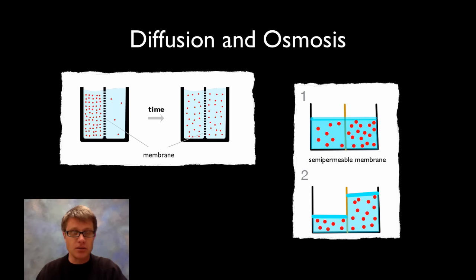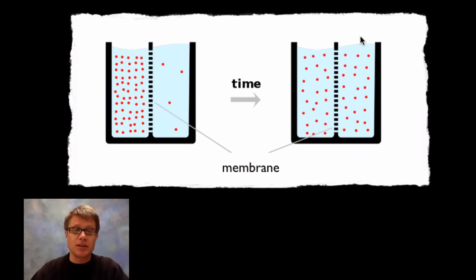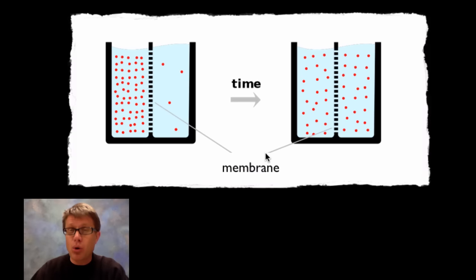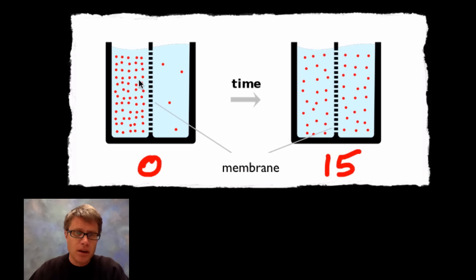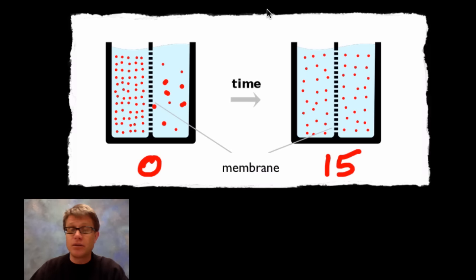Let me go into more depth on diffusion. Imagine a jar separated in the middle by a porous membrane that allows material to move back and forth. At time zero, one side has sugar water and the other side has distilled water. After 15 minutes, those sugar molecules migrate to the other side until there's equal concentration on both sides — essentially isotonic on either side of that membrane. That's diffusion: movement of molecules from an area of high to low concentration.